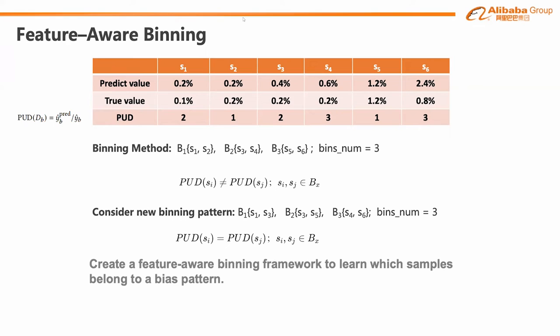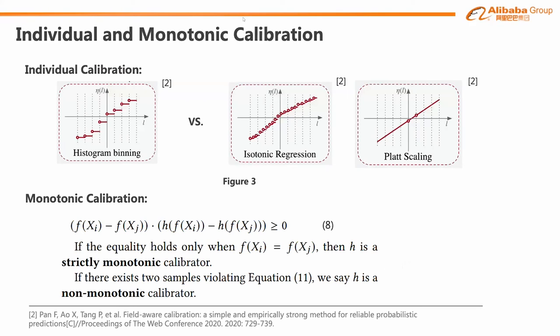Specifically, we employ a linear function as the bias pattern to achieve individual calibration — we would like to find samples that have the same SUD (Sample Underestimated Degree). Similarly, we can also define PUD corresponding to partition instead of sample. Besides true probability, order accuracy — often measured by AUC — is also important to various applications such as computational advertising.